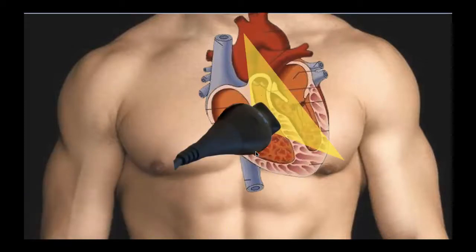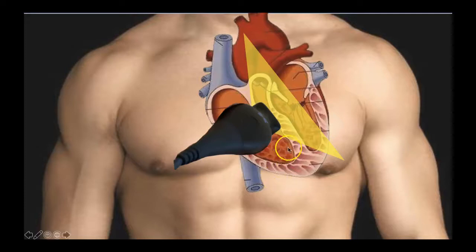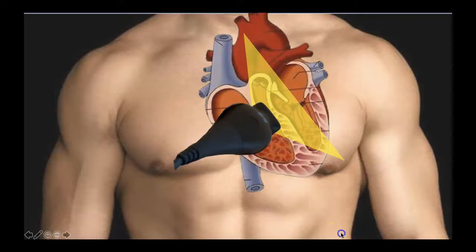Let's start off with our parasternal long axis view. You're going to have your probe to the left of the sternum — the patient's left — with the probe marker towards the patient's left hip. Just as an FYI, some different departments, such as some cardiology departments and ICUs, will flip this convention and have the probe marker towards the patient's right shoulder. But for us today, we're going to have the probe marker facing towards the patient's left hip.